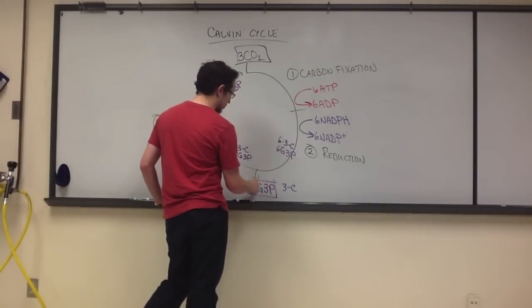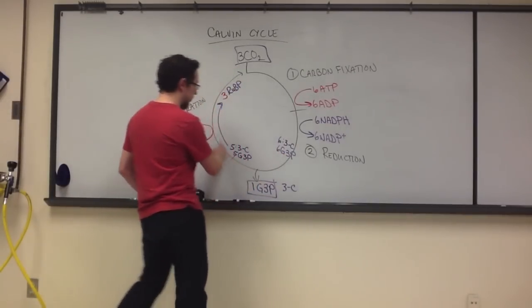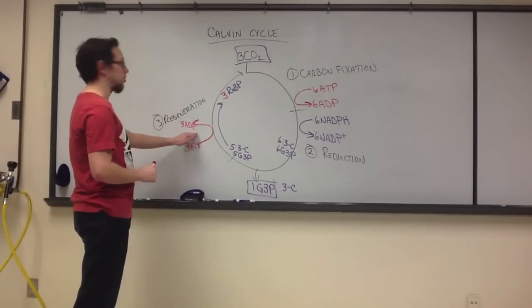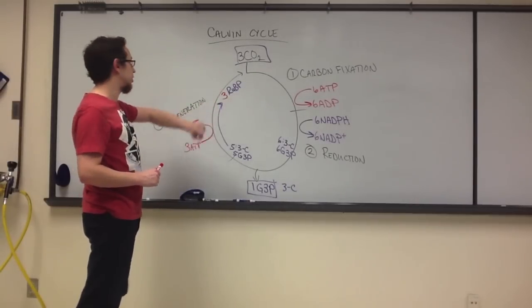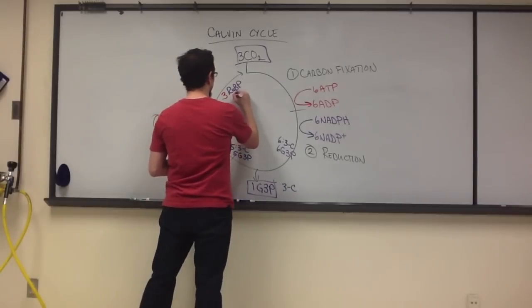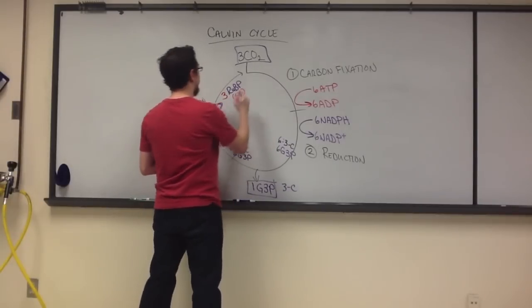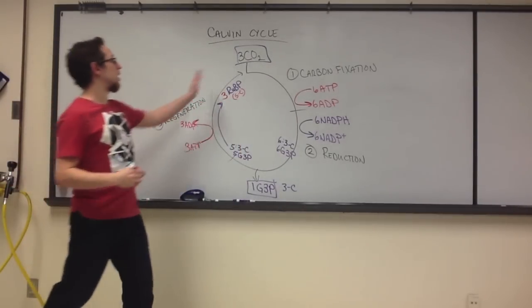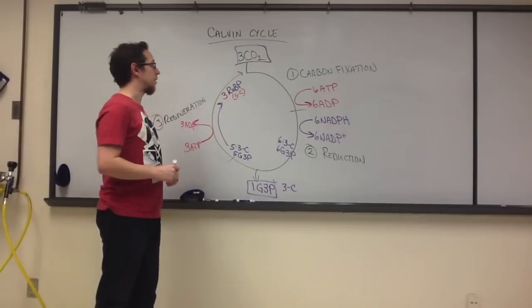One of these molecules then leaves the cycle while the other five continue. The addition of energy is then used to regenerate the three, five-carbon molecules of ribulose-biphosphate, which we can then use again to carry out the cycle.